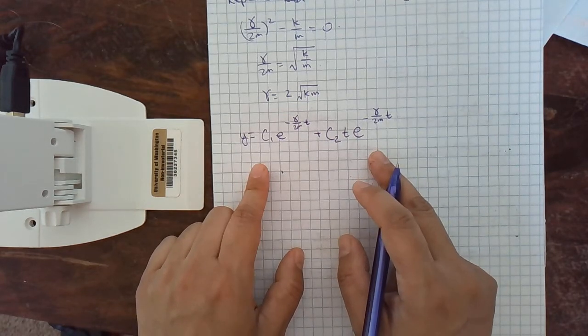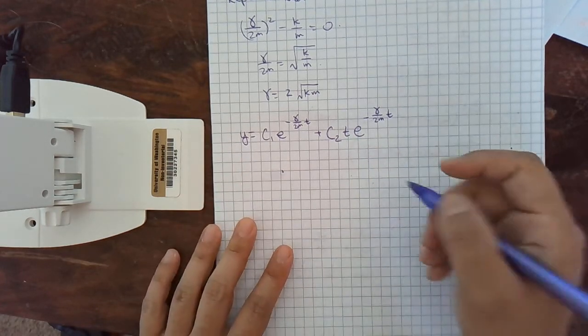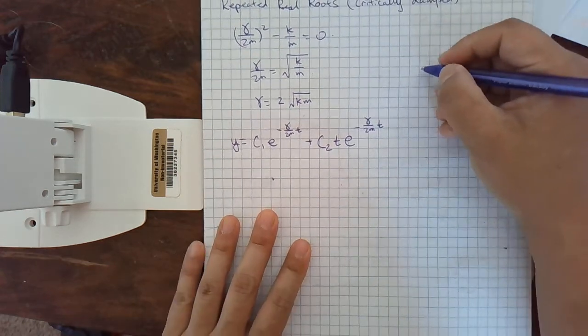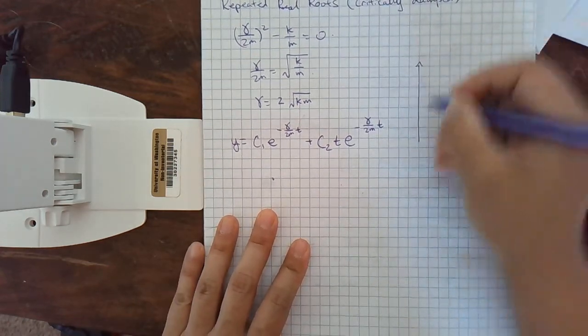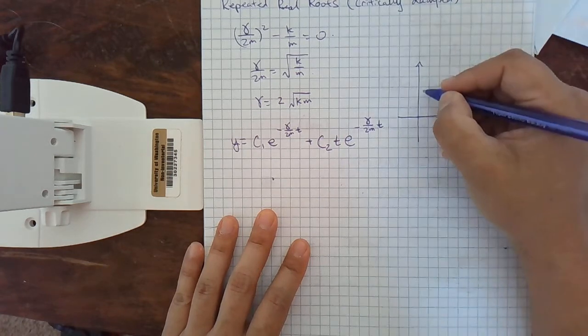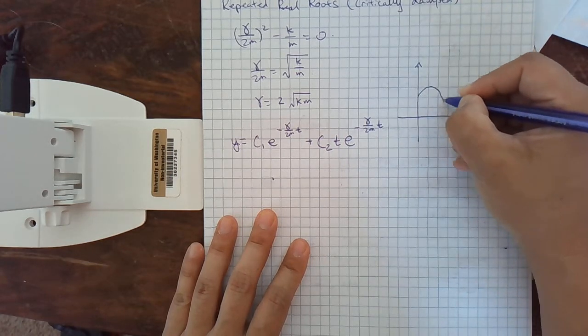So what does the graph look like? Well, you've got three possibilities for the graph. Really, they're all the same graph. Your graph is going to look something like this.